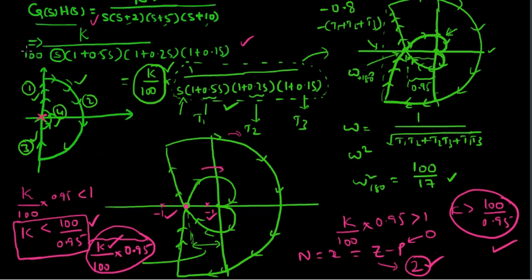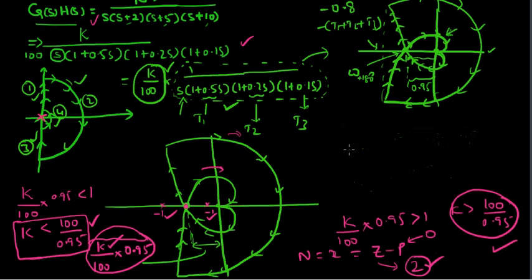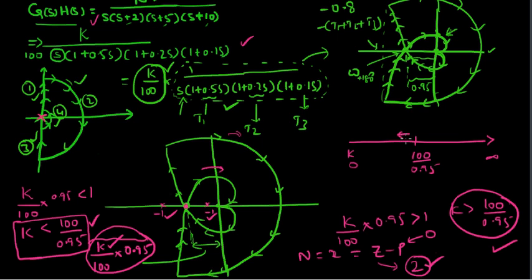If we draw a K line on the positive axis, where K varies from 0 to infinity, and mark the point K = 100/0.95: below this value the system is stable, and above this value the system is unstable. This unstable region and this stable region define the complete stability condition for this closed loop system.